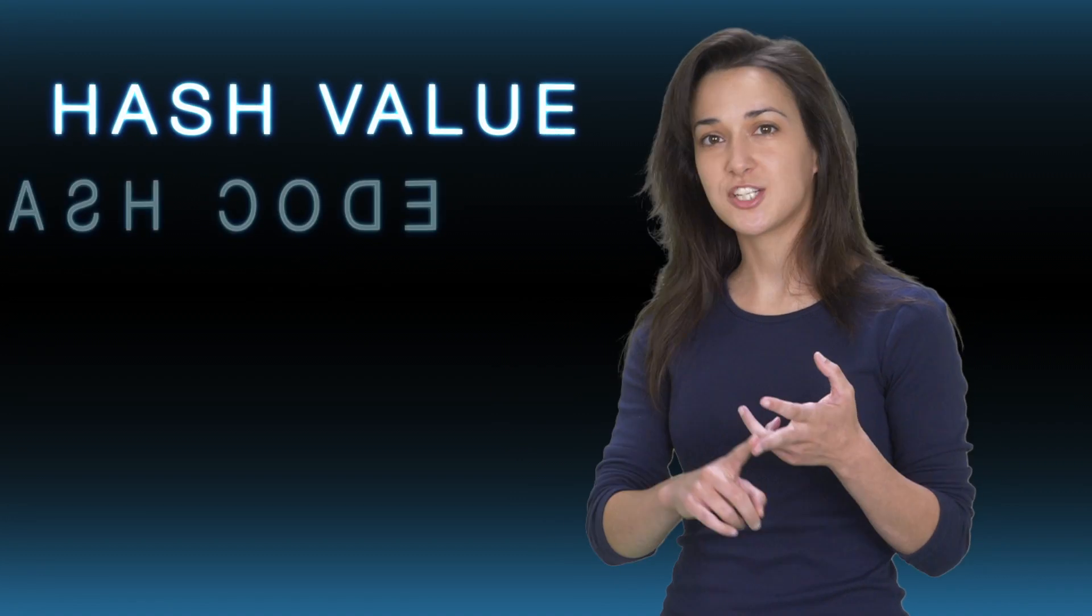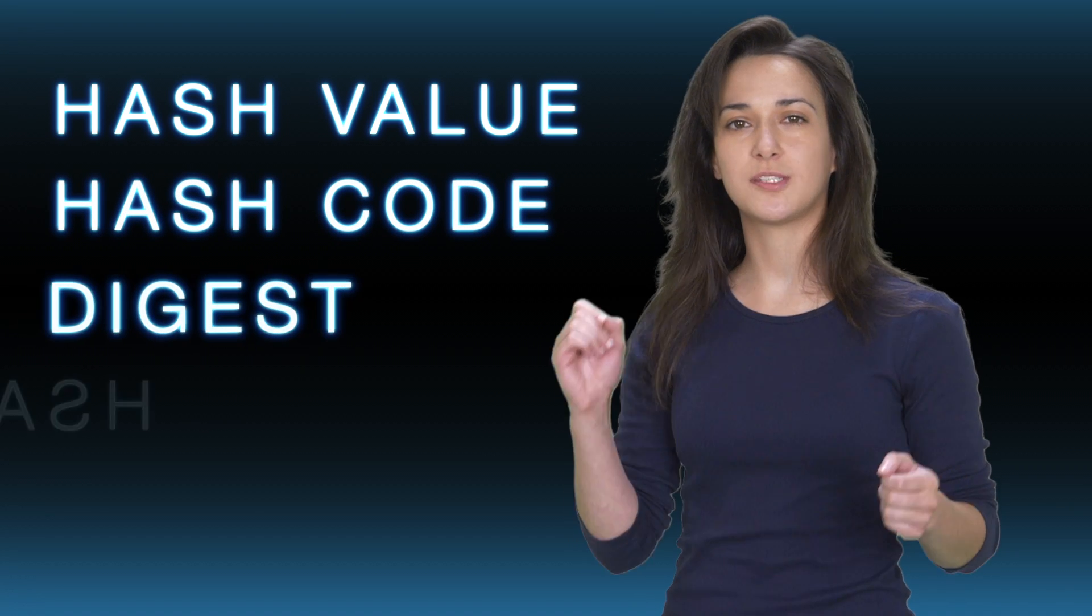Now, the output of the hash function is a fixed form of data, just like a social security number. And this output is commonly known as a hash value, hash code, digest, or simply a hash.